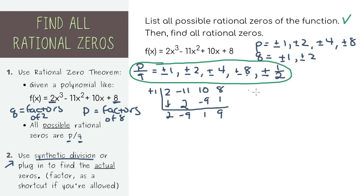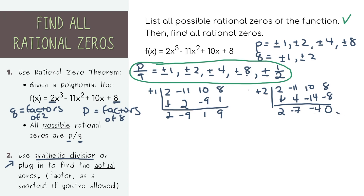Next I'm going to pick positive 2 and see if that is a zero. We got a remainder of zero, which is perfect. Because it divided evenly, we know that positive 2 is actually one of the zeros. If your teacher specifically asks you to find all zeros using synthetic division, this is how you do it. You have to keep picking numbers until you find all zeros. This function has a degree of 3, so you know that you have three zeros to find. We just found one, and there are two more in this list.